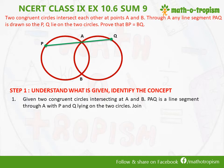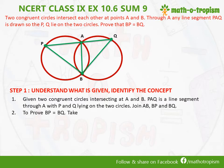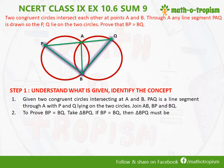We are going to join AB, BP and BQ. We need to prove that BP is equal to BQ. If we take triangle BPQ, we can see that BP equal to BQ makes it an isosceles triangle because two sides are equal.